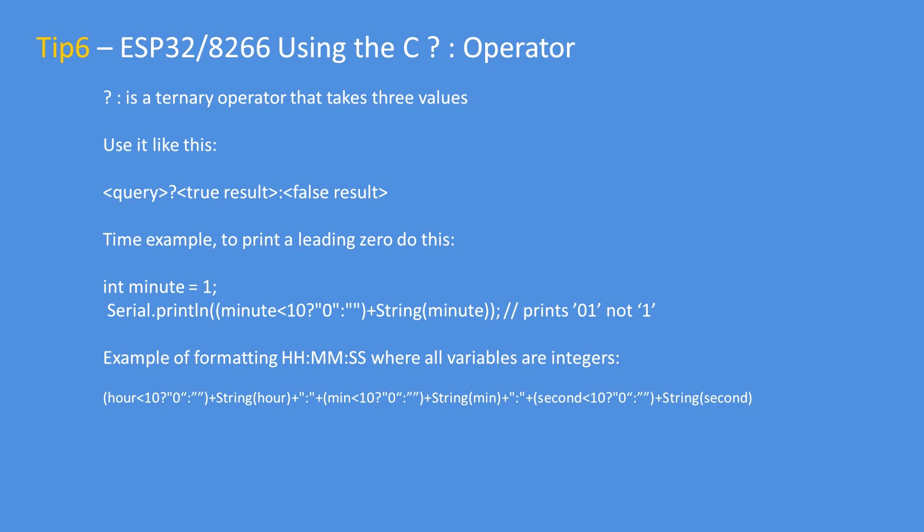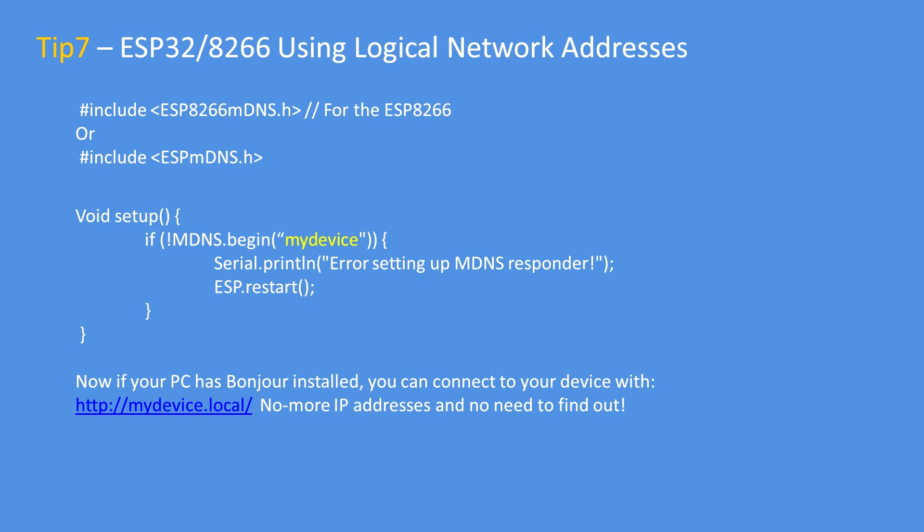In this tip I'll cover the use of the C ternary operator. It takes three components: a query — is the result true, do this; or is the result false, do that. For example, to print a number with a leading zero: if the minute is less than 10, print a zero, otherwise print nothing, then print the minute — so it prints '01'. I've given a full example of how to format hours, minutes and seconds with leading zeros. It's a very convenient tool to use inline, which is exceptionally handy.